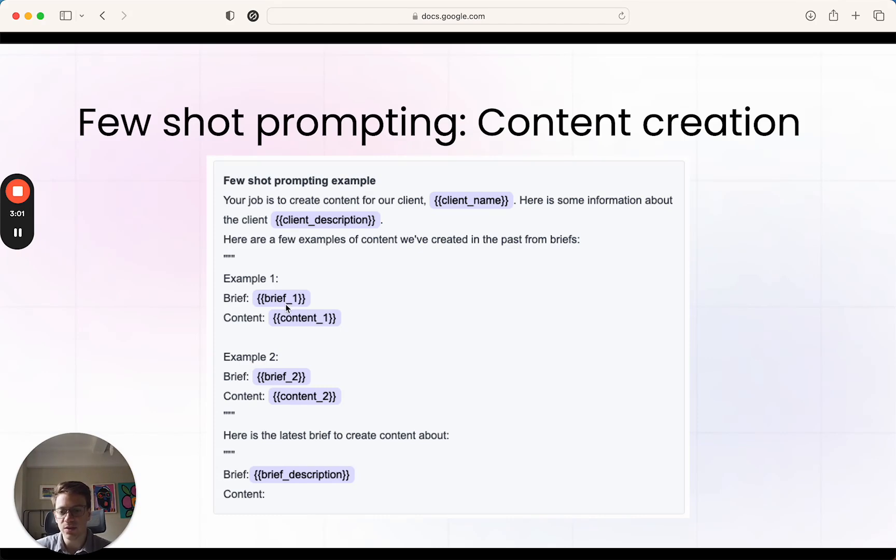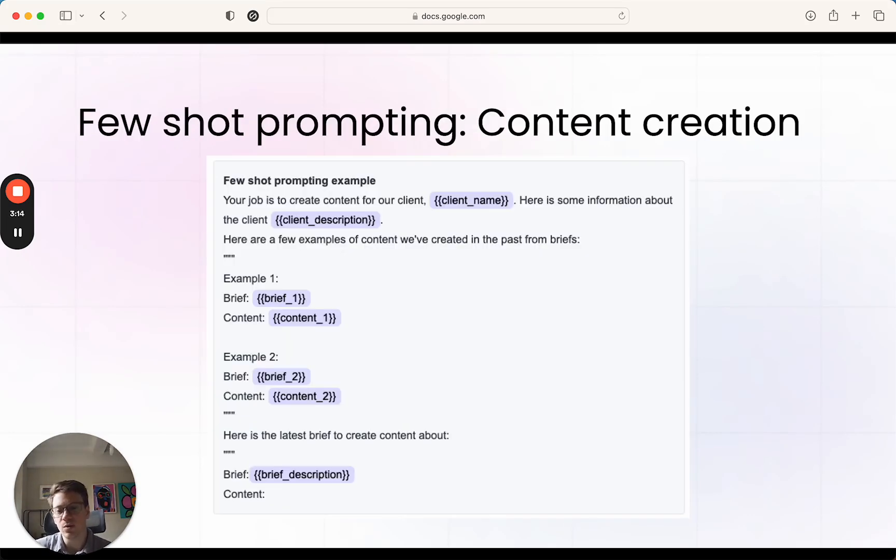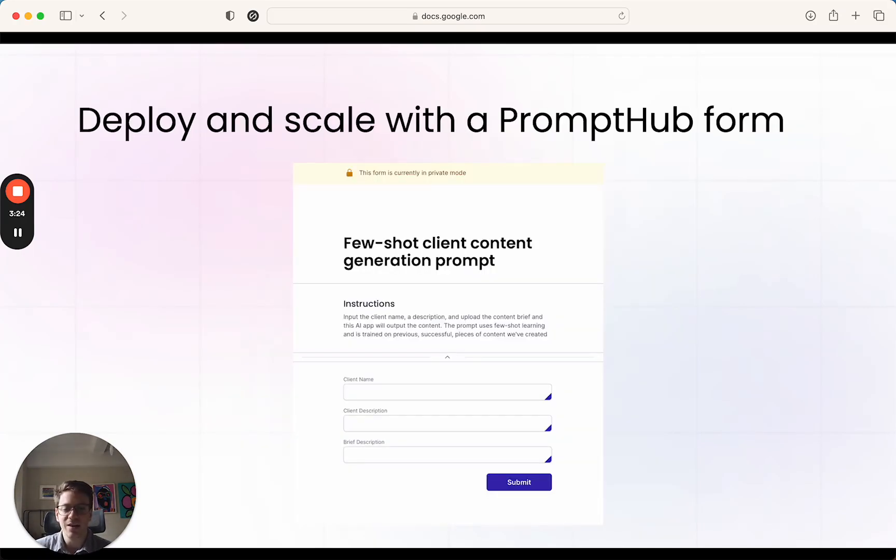You could even turn this into a little mini-application using a PromptHub form or some other tool. You can then basically take this prompt, put it onto a URL, and now your team can just drop in the description for whatever the new brief or new piece of content needs to be made. The PromptHub form will run that prompt and give you an output. As I said, once you have those examples in place, you do that little bit of work, format it, and everything's good to go. You can use this for any other piece of content for that specific client.